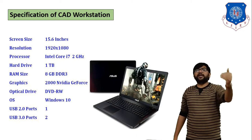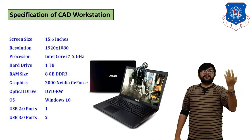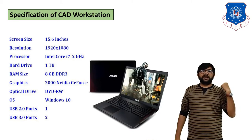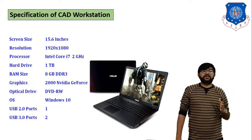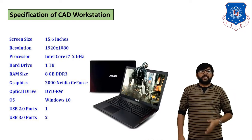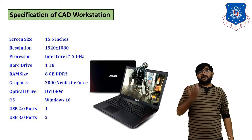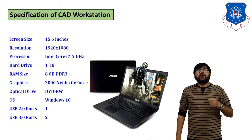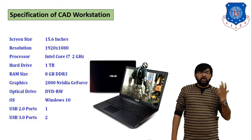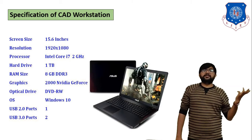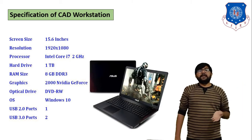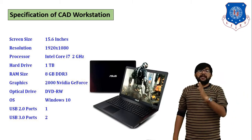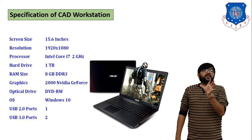Here is one sample example. Screen size: 15.6 inch. Display resolution: 1920×1080. Processor: Intel Core. Hard disk: 1TB. RAM: 8GB. Graphics card: Nvidia. Optical drive: DVD-RW. Operating system: Windows 10. USB 2.0: one port. USB 3.0: two ports. This is one sample example of a CAD workstation. You can write down the specification according to your own system — the answer may vary from student to student.